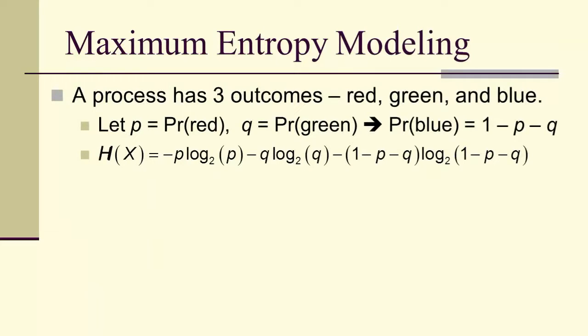If we have three outcomes, and we're going to say these three outcomes are red, green, and blue, then p is the probability of red, q is the probability of green, so the probability of blue is 1 - p - q.